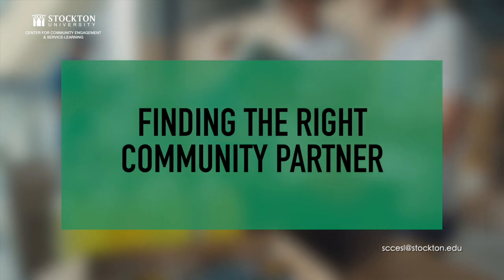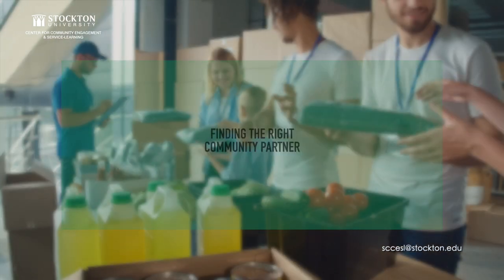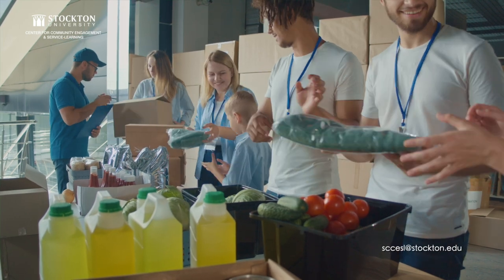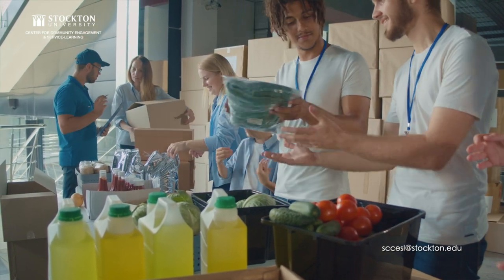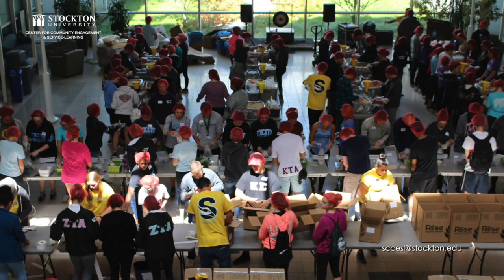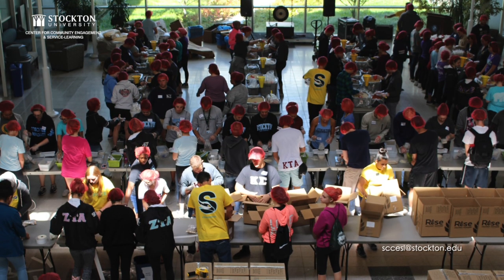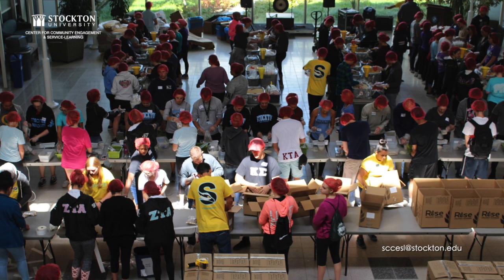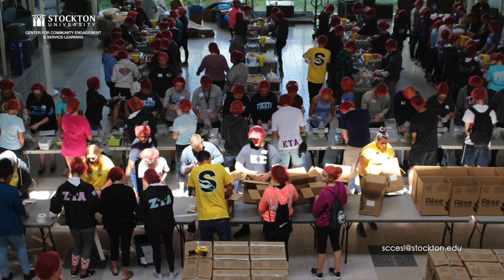Finding the right community partner. To begin, it is important to first determine the best kind of community partner to begin building a relationship with. Some key areas to consider are prior relationship with Stockton University. An easy way to begin is to work with a partner who may already have a prior or current relationship with Stockton. This can be helpful in that the community partner will already have an understanding of Stockton's mission and vision, as well as an understanding of what it is to work with a faculty member.